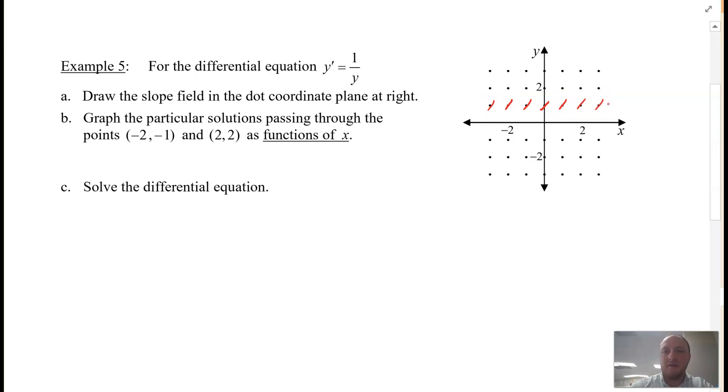And so for all the y values of 2, it's 1 over 2, it's 1/2. So they'll look something like this - rise 1 over 2. And then up here at y equals 3, 1 over 3. They all have a slope of 1 over 3, so a little bit more flat. So here is our slope field.